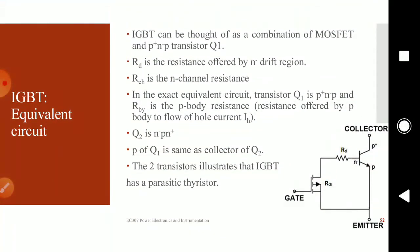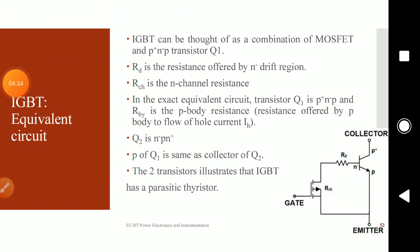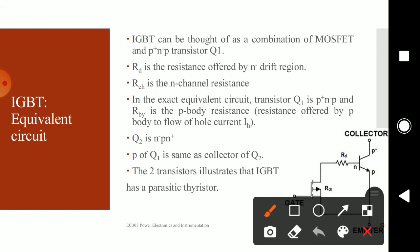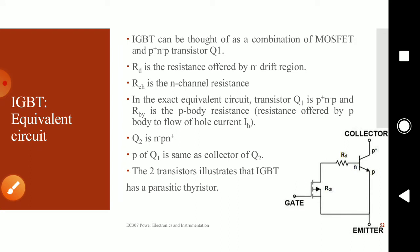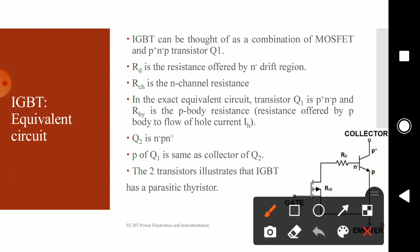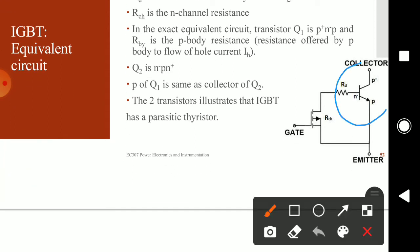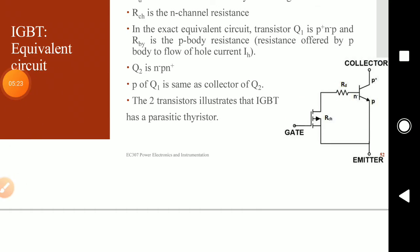Moving on to the approximate equivalent circuit of the IGBT, you can see the three terminals: the collector, the gate, and the emitter. The resistances shown are the resistance offered by the N-minus layer, and RCH is the N-channel resistance. A transistor is provided here representing the P-plus, N-minus, and P region of the IGBT, and you also have the MOSFET. The IGBT is a combination of the MOSFET and the BJT.